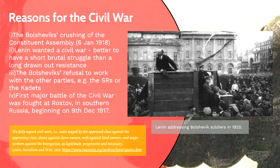The quote from Lenin's 'Socialism and War' (1915) gives an insight into his attitude: 'We fully regard Civil Wars, i.e. wars waged by the oppressed class against the oppressing class — slaves against slave owners, serfs against landowners and wage workers against the bourgeoisie — as legitimate, progressive and necessary.' He saw Civil War as a legitimate act in order to defend the revolution. Another reason was the Bolsheviks' refusal to work with other parties, for example the SRs or the Cadets.